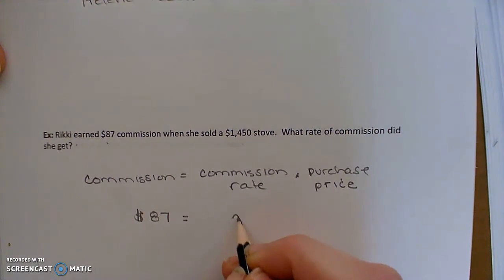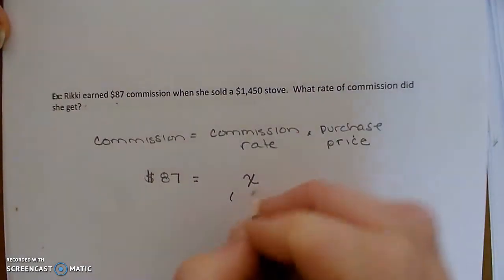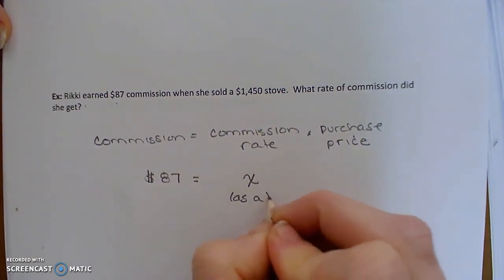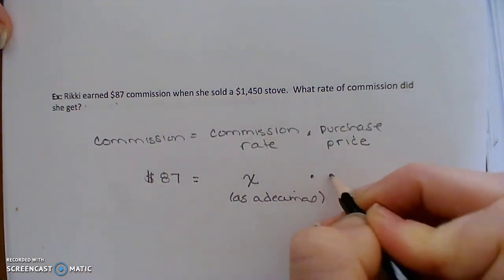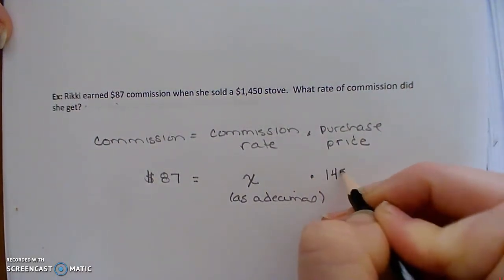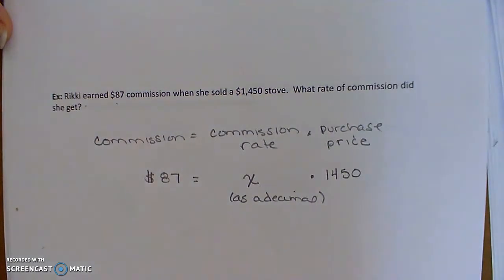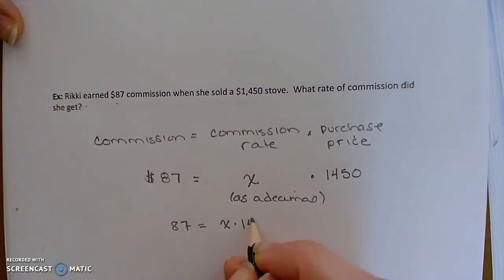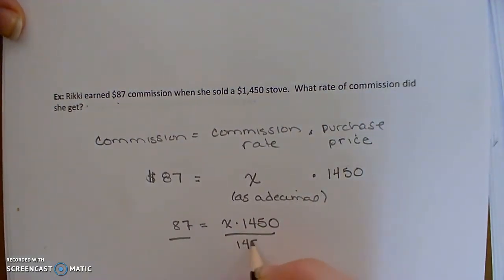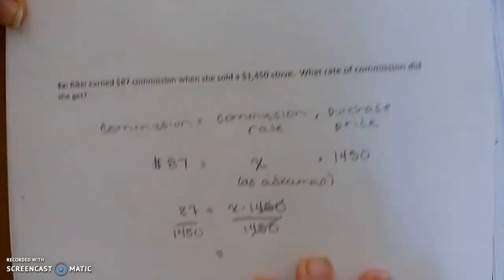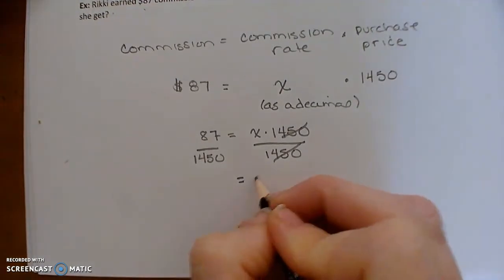Her commission was $87. We don't know what the rate is, so I'll call it X — and usually we treat this as a decimal — times the purchase price, which is $1,450. So we have: 87 equals X times 1,450.